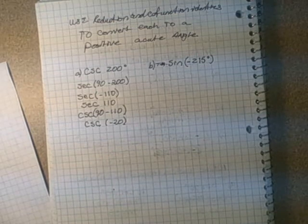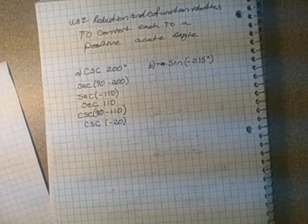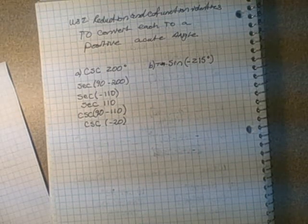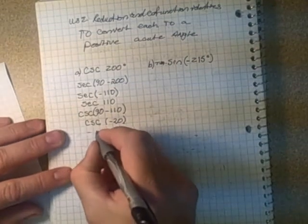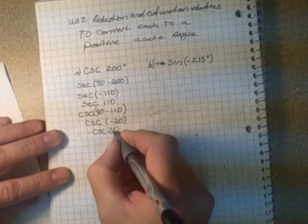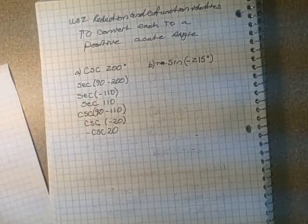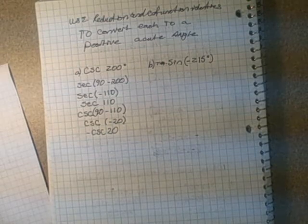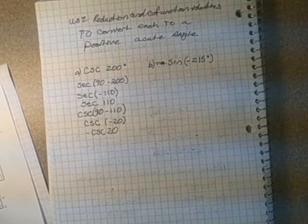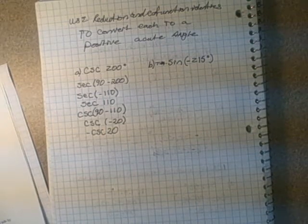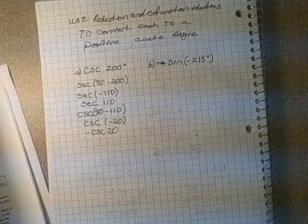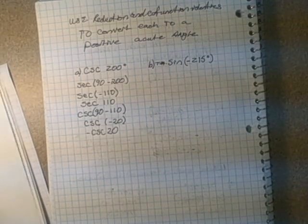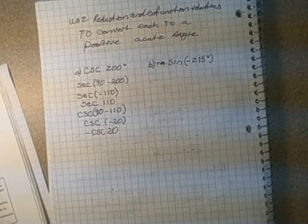That's still not a positive angle, so we go to the reduction identity for cosecant: cosecant of negative theta equals negative cosecant theta. So this becomes negative cosecant 20. We can check it — cosecant is the reciprocal identity for sine, so we can use the sine value of 20 and take its reciprocal.